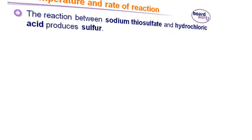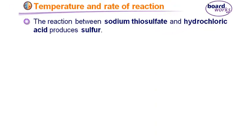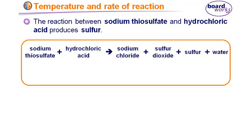If we want to test the effect of temperature on the rate of reaction experimentally, we have a very famous experiment: the reaction between sodium thiosulfate and hydrochloric acid. The reaction is between two clear solutions — hydrochloric acid and sodium thiosulfate. The reaction between these two clear solutions produces a yellow precipitate due to the formation of sulfur.